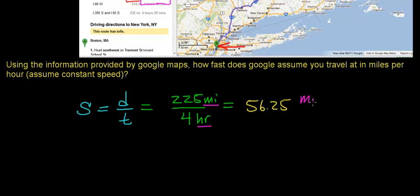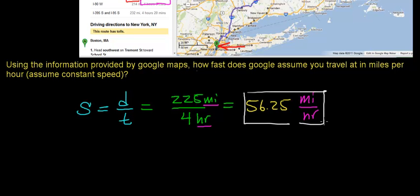So Google assumes that your average speed while traveling between Boston, Massachusetts and New York City is 56.25 miles per hour. That assumes you're traveling 56.25 miles every single hour — and that's what it means to travel at constant velocity: equal distances in equal amounts of time.